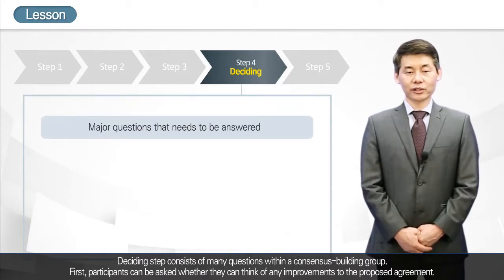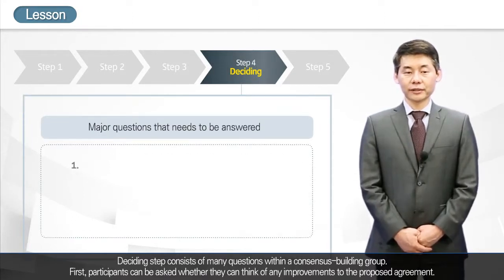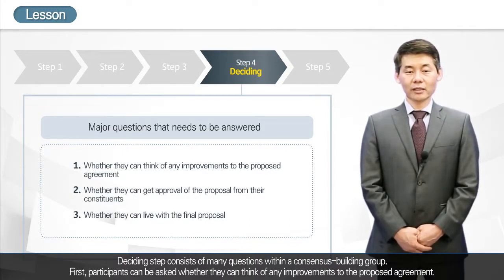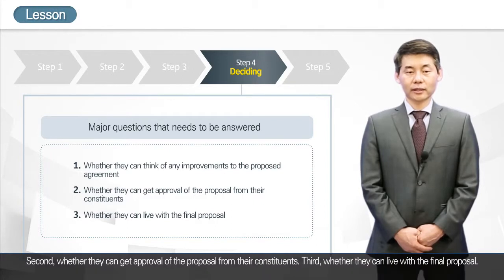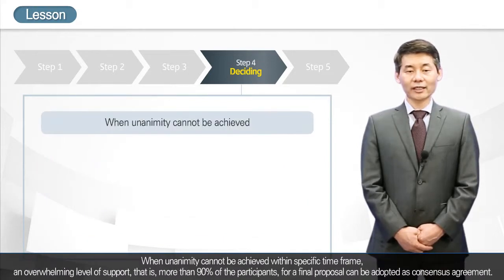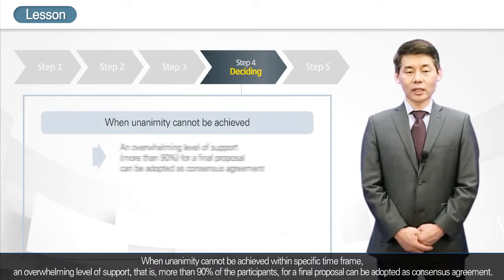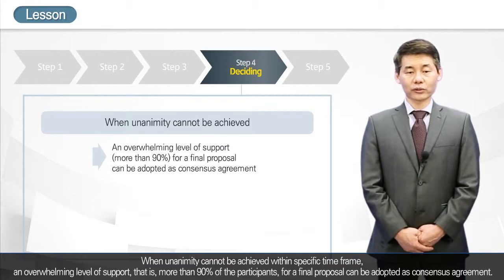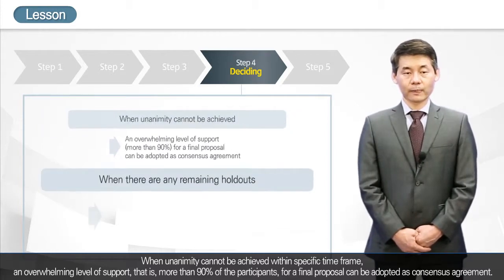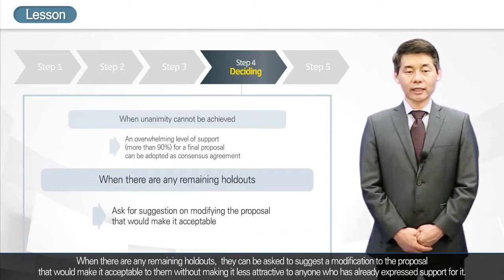The deciding step consists of several questions within a consensus-building group. Participants can be asked: whether they can think of any improvements to the proposed agreement; whether they can get approval of the proposal from their constituents; and whether they can live with the final proposal. When unanimity cannot be achieved within a specific timeframe, an overwhelming level of support — more than 90% of participants — for a final proposal can be adopted as a consensus agreement. When there are remaining holdouts, they can be asked to suggest a modification that would make the proposal acceptable to them without making it less attractive to those who have already expressed support.